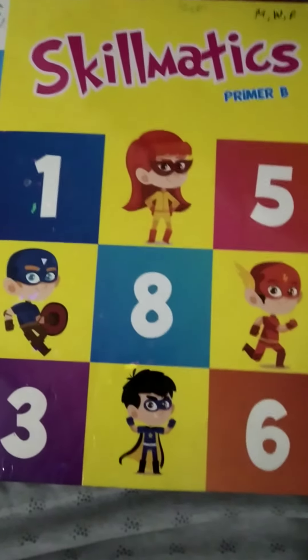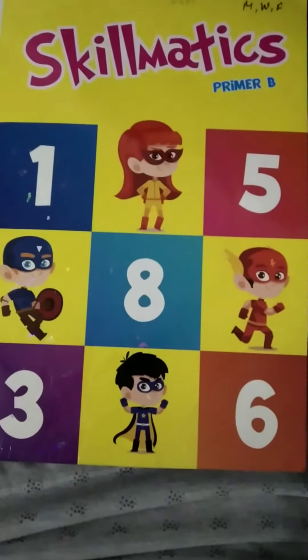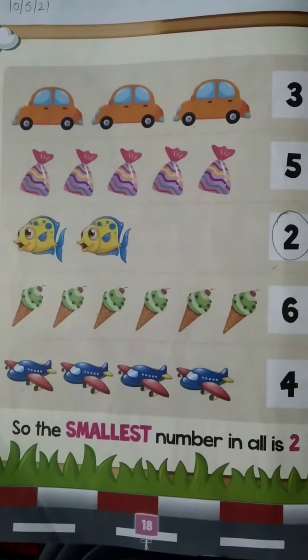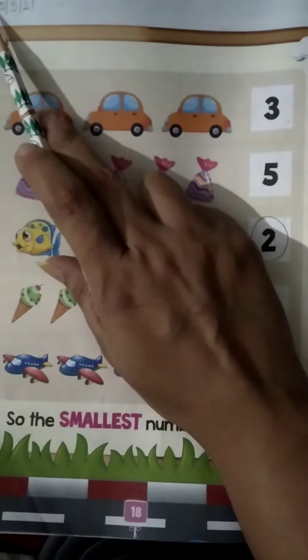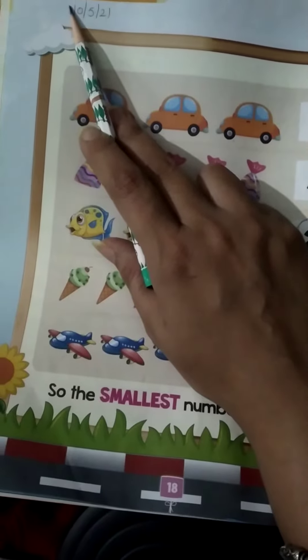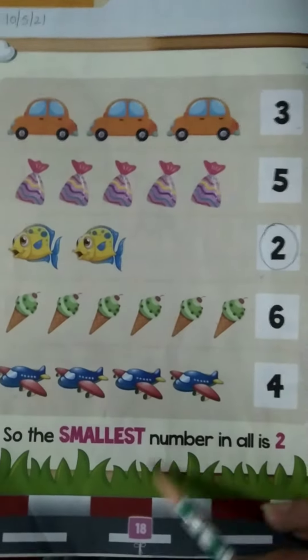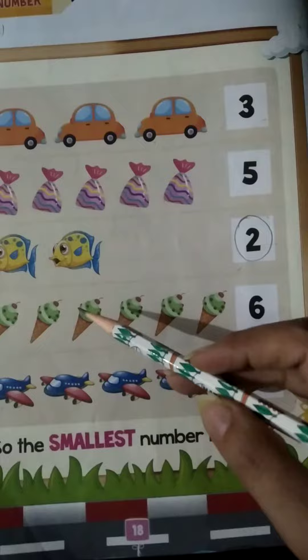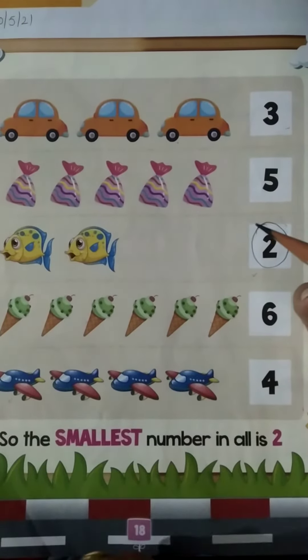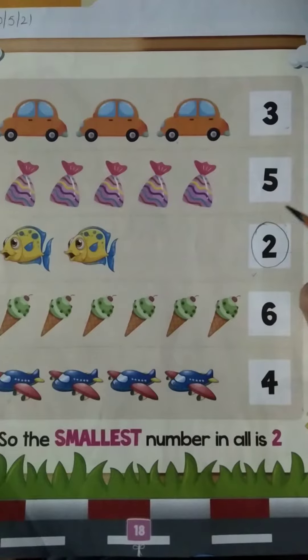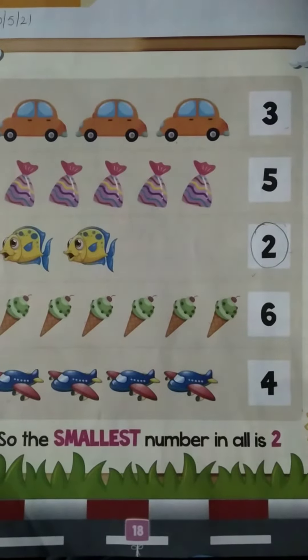Good morning dear students. Check out your Skillmatics. Today we will do page number 18. Smallest number. Now we have to find in this page which one is the smallest number. Smallest number kounsa hai? Jismei sabse kam objects saate hai.